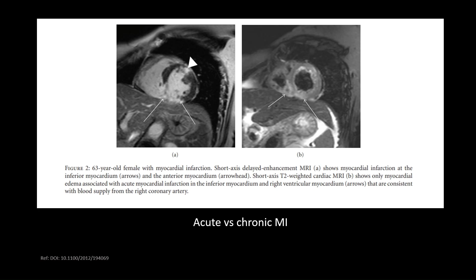Here is an example. We have a late gadolinium enhancement image showing two areas of enhancement — these could be infarcts or scar. On the corresponding STIR image, edema is present only in one area, so we can conclude that one is an acute infarct and the other is a chronic infarct. This is one of the key applications of STIR images in cardiac MRI.